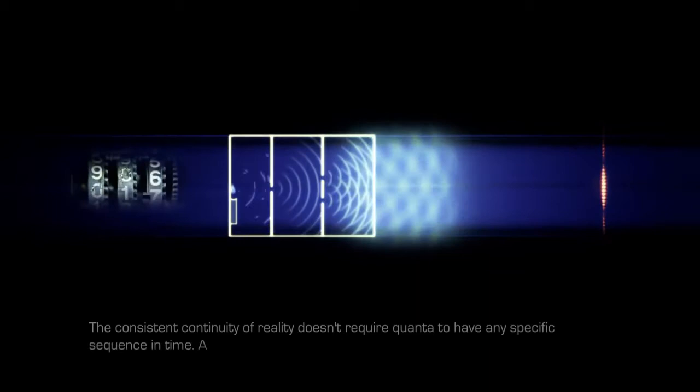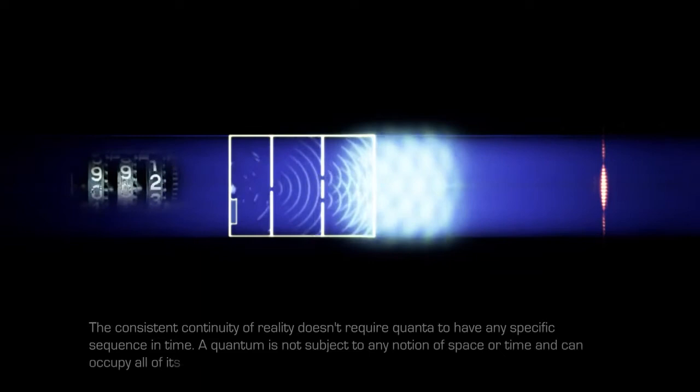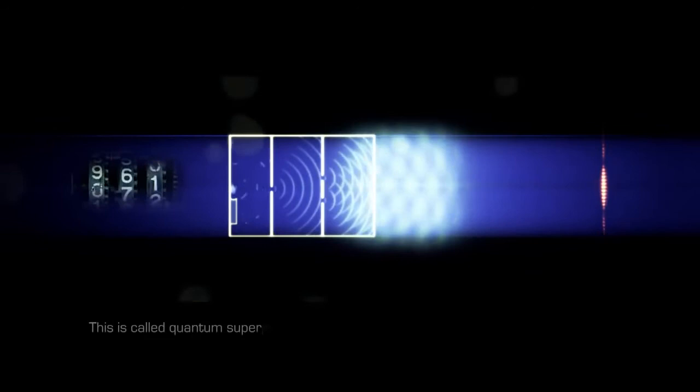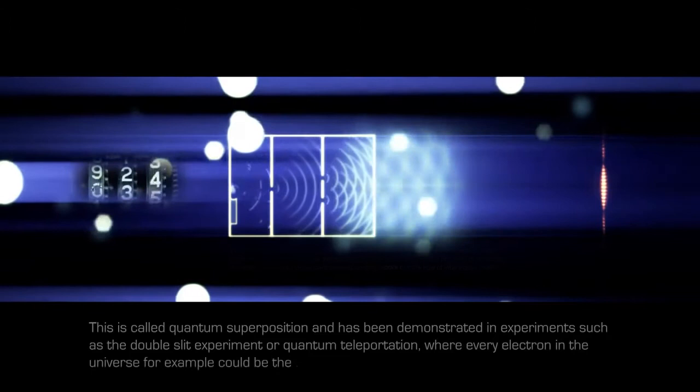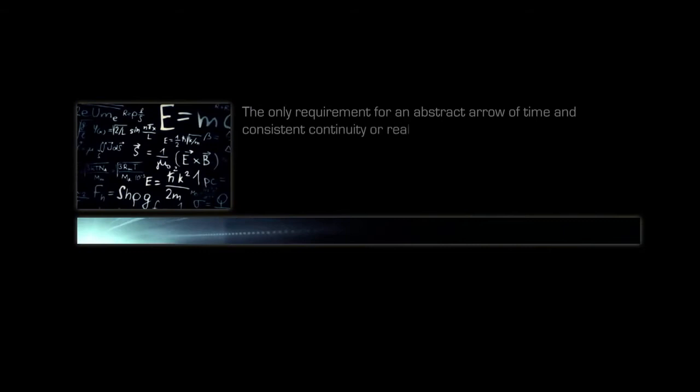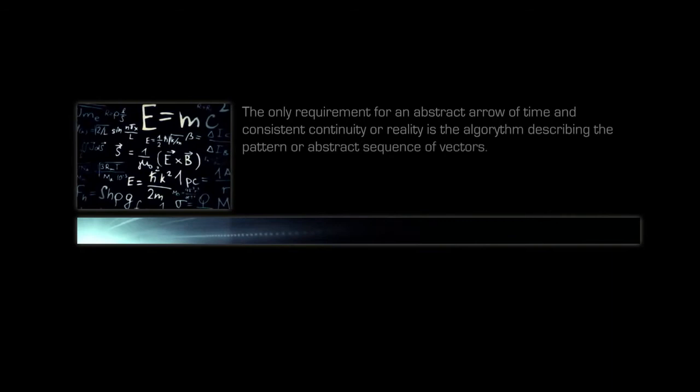The consistent continuity of reality does not require quanta to have any specific sequence in time. A quantum is not subject to any notion of space or time and can occupy all of its possible quantum states simultaneously. This is called quantum superposition and has been demonstrated in experiments such as the double slit experiment, or quantum teleportation, where every electron in the universe, for example, could be the exact same one. The only requirement for an abstract arrow of time and consistent continuity or reality is the algorithm describing the pattern or abstract sequence of vectors.